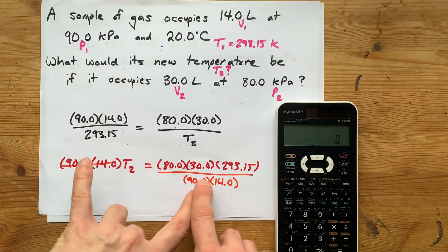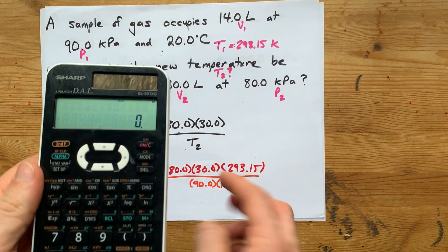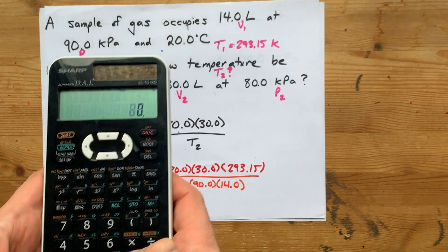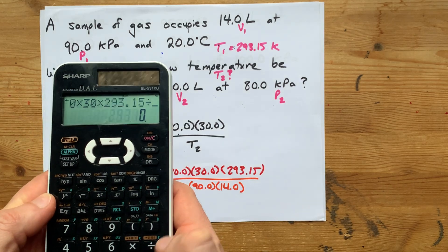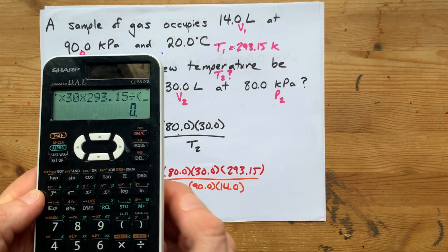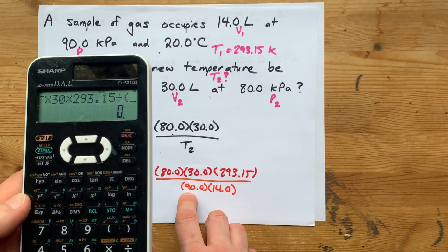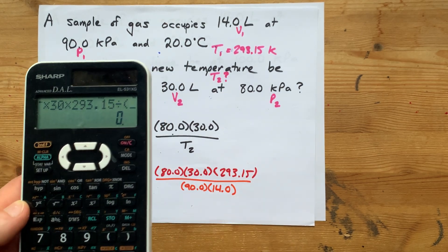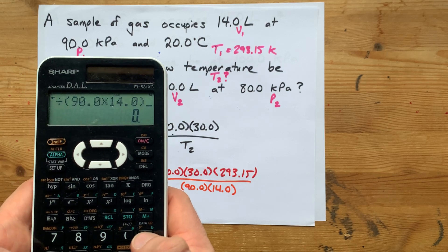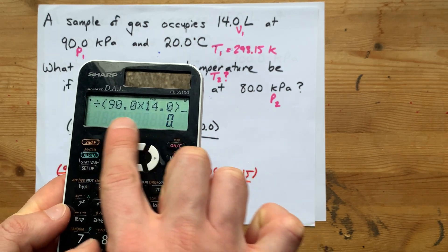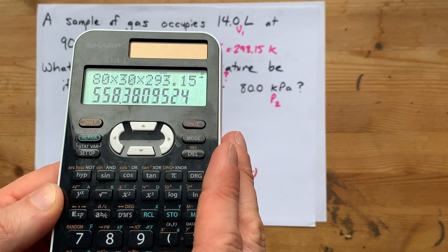You can do the whole top and then the whole bottom and divide. Make sure your denominator is written in brackets on your calculator. So it's 80 × 30 × 293.15 divided by (in brackets) 90 × 14 — that ensures you're dividing by the product and not accidentally multiplying an extra factor. My final answer is 558.38.